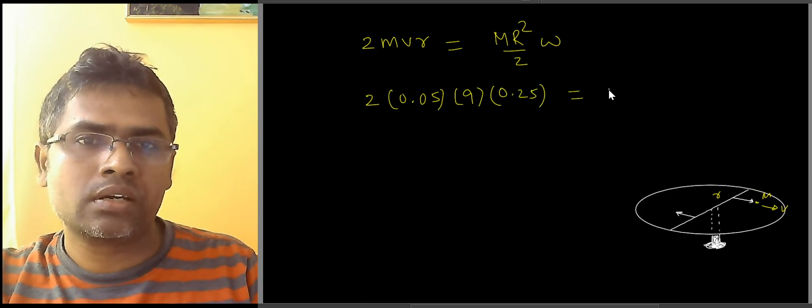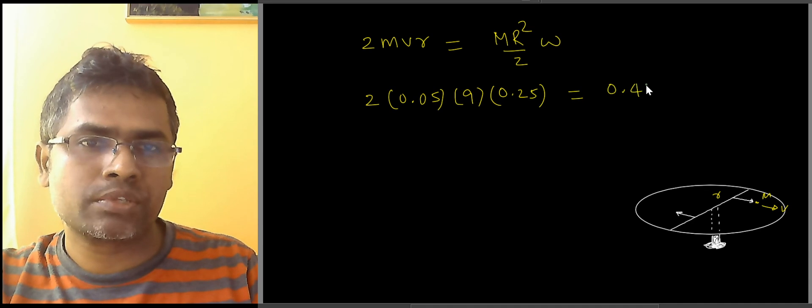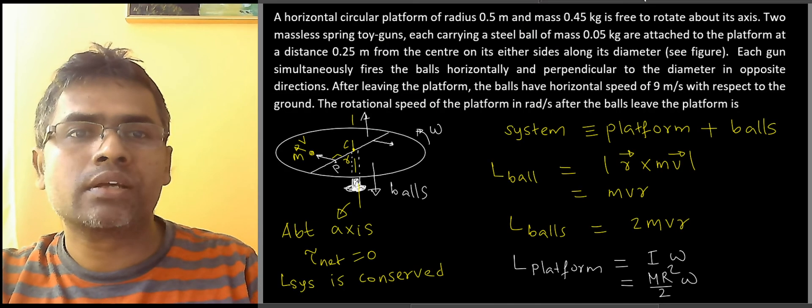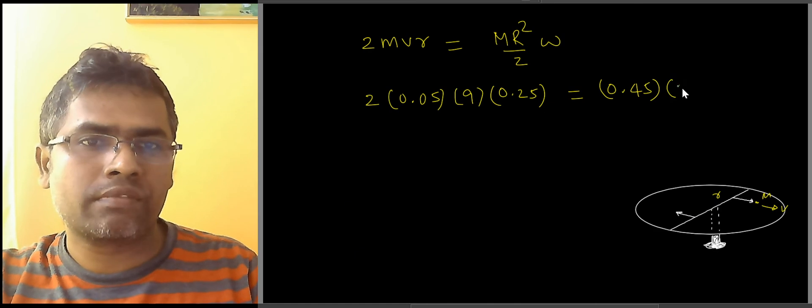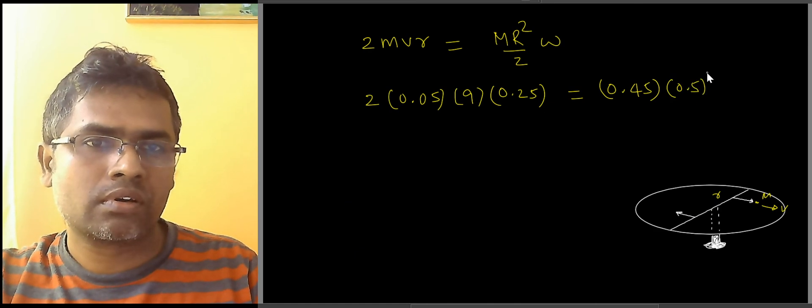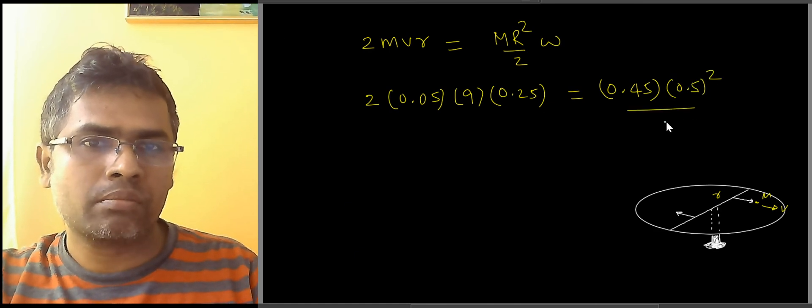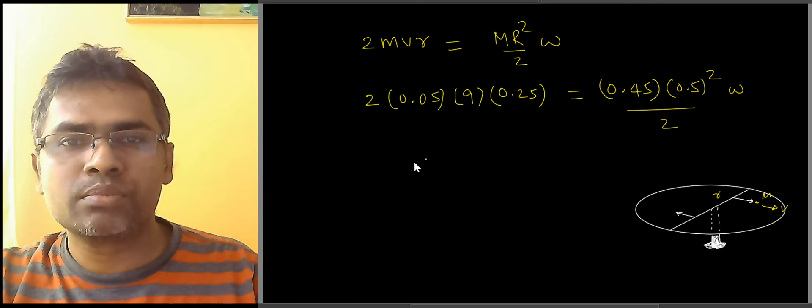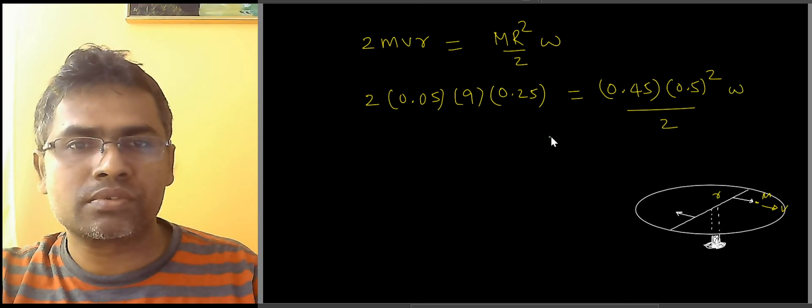On the other side, you have mass of the platform is 0.45 and the radius is 0.5 squared by 2 into omega. If you eyeball the numbers, the numbers are real nice.